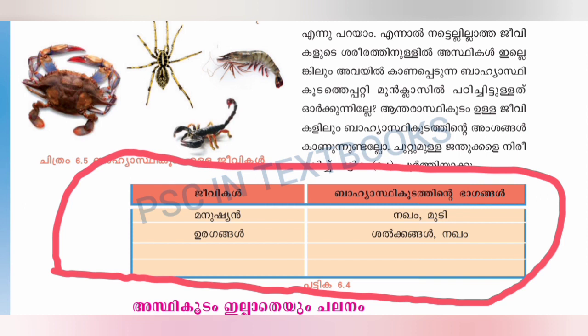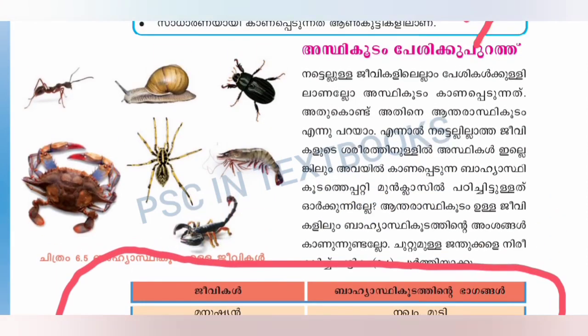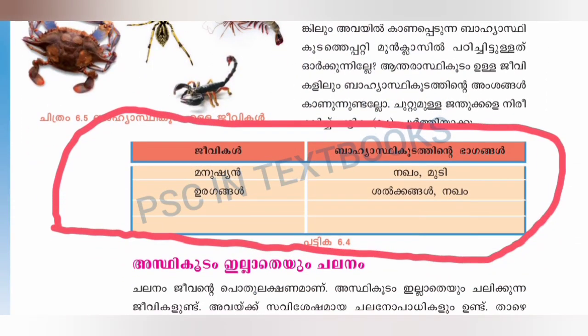We are going to study the parts of the exoskeleton in one life. In the human being, the body has nails and hair — these are natural structures. Scales are another example. Birds have feathers. The birds are like feathers.